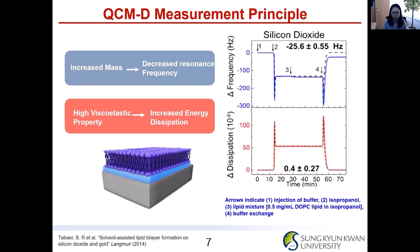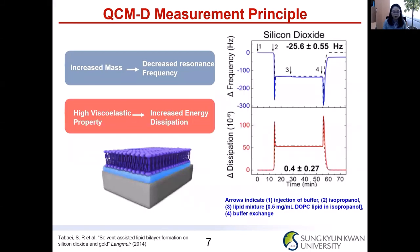In the QCM-D values, you will see two main values: frequency and dissipation. For the frequency, increased mass reflects a decrease in the resonant frequency. For the dissipation, high viscoelastic properties result in increased energy dissipation.